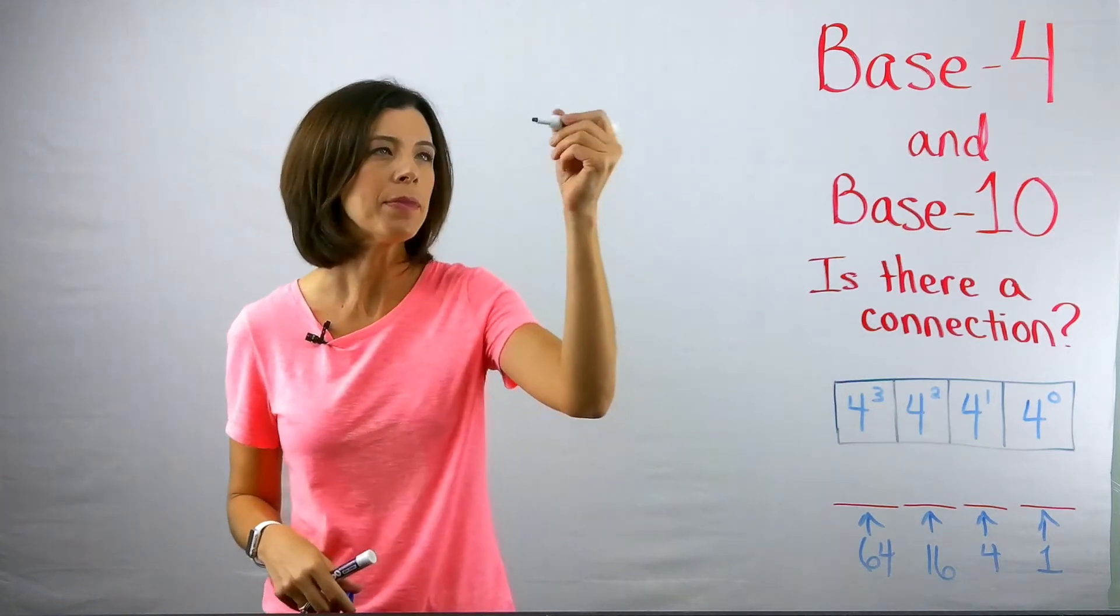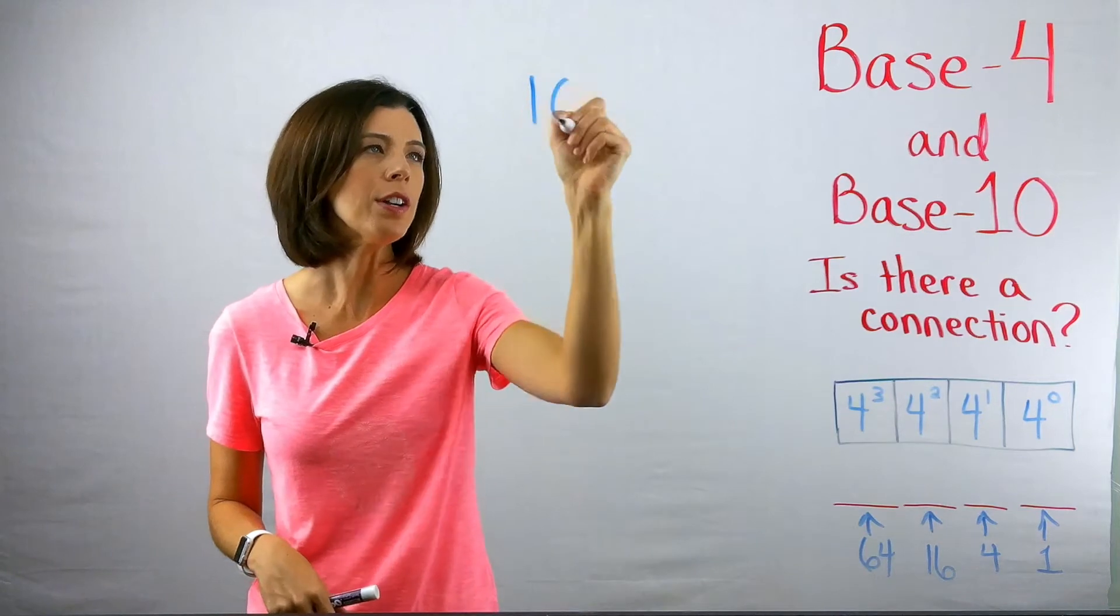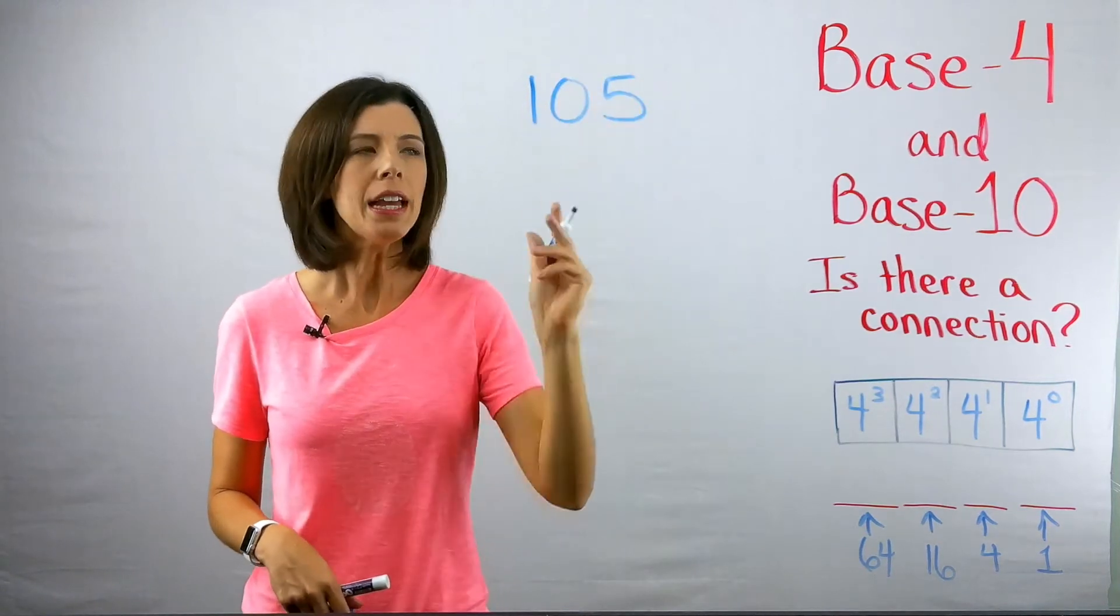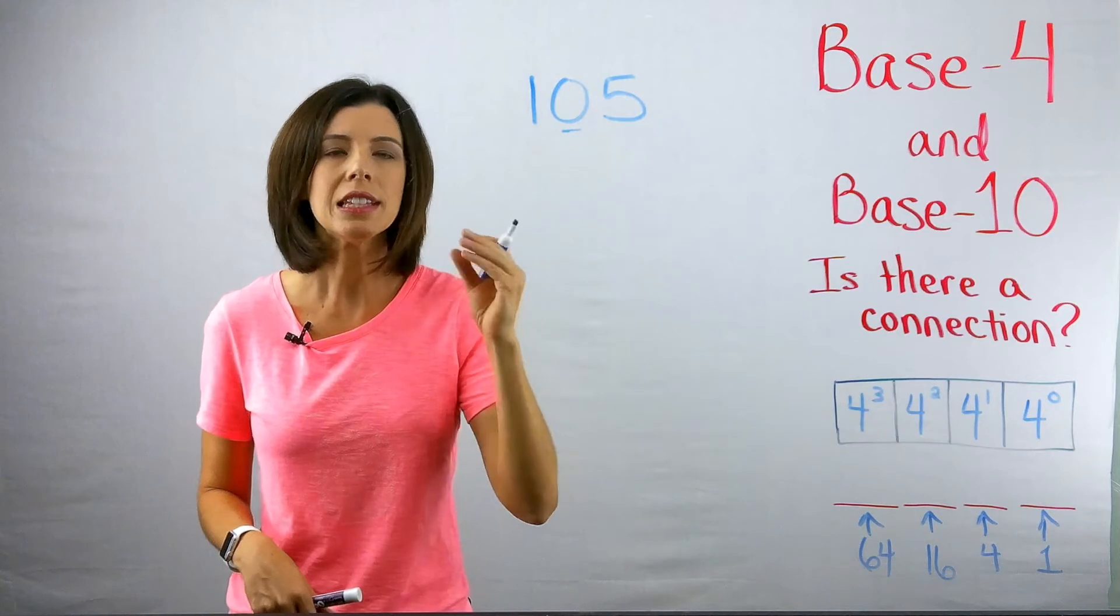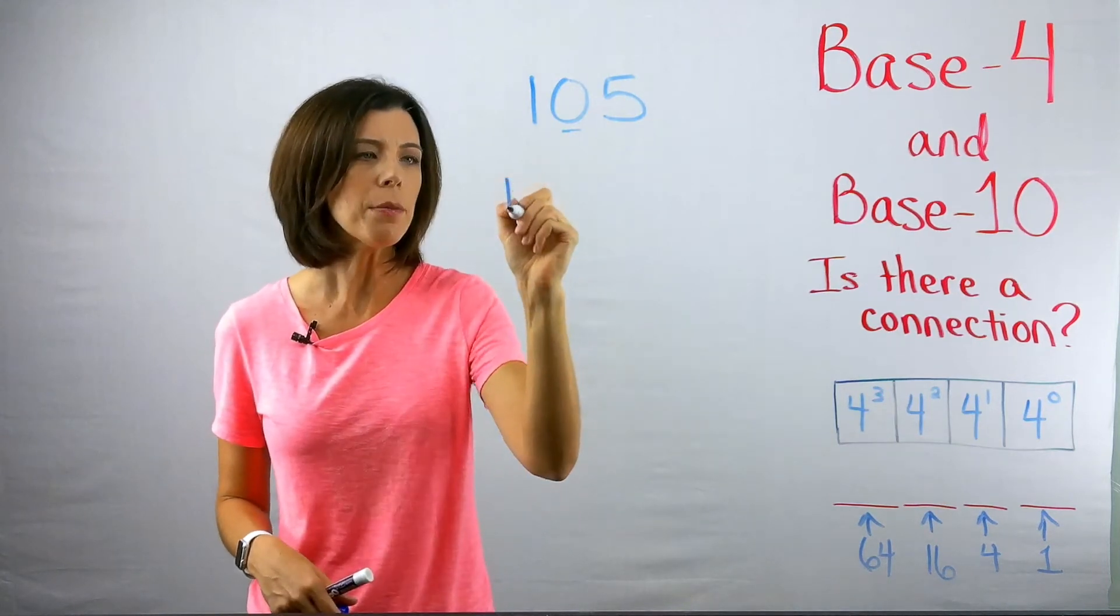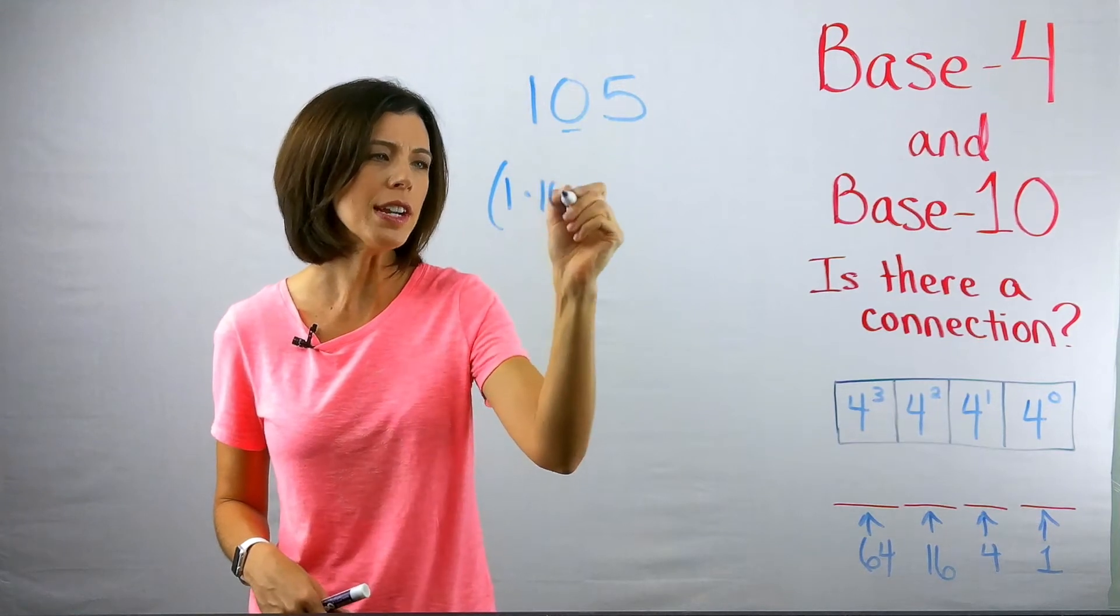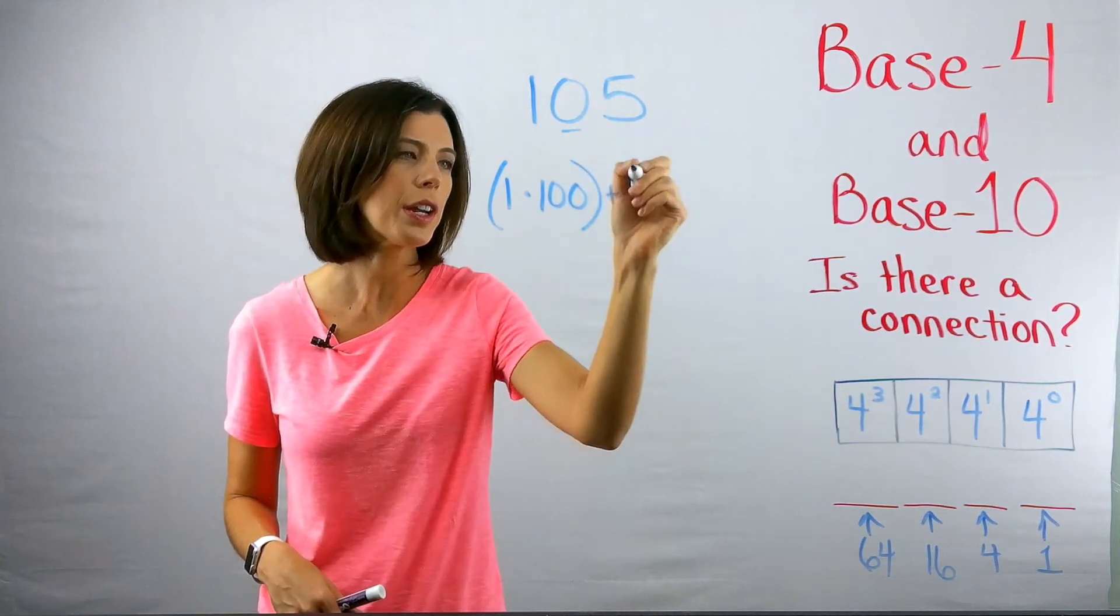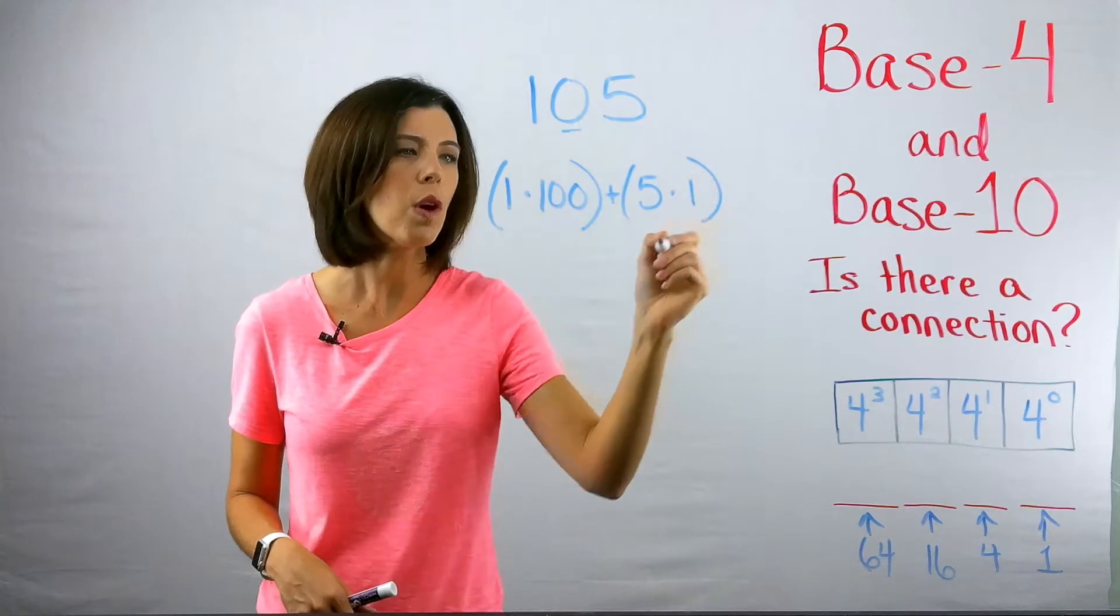A student once asked me, in the number 105, is it important that students understand that zero represents zero groups of 10? In other words, if I'm writing the expanded notation, couldn't I just write one times 100 plus five times one?